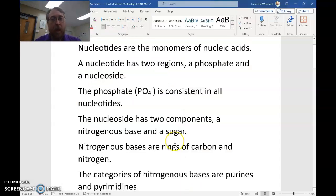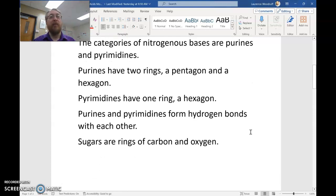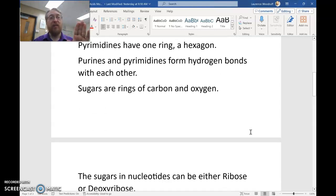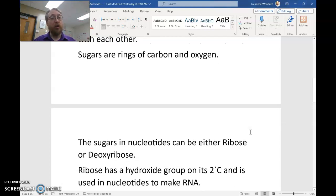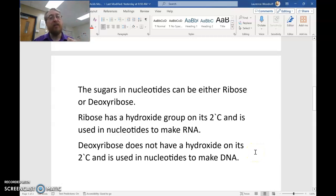Let's review. Nucleotides are the monomers of nucleic acids. A nucleotide has two regions, a phosphate and a nucleoside. The phosphate, PO4-, is consistent in all nucleotides. The nucleoside has two components, a nitrogenous base and a sugar. The nitrogenous bases are rings of carbon and nitrogen. The categories of nitrogenous bases are purines and pyrimidines. Purines have two rings, a pentagon and a hexagon. Pyrimidines have one ring, just a hexagon. The purines and pyrimidines form hydrogen bonds with each other. And sugars are rings of carbon and oxygen. The sugars in nucleotides can be either ribose or deoxyribose. Ribose has a hydroxide on its two prime carbon and is used in nucleotides to make RNA. And deoxyribose does not have a hydroxide on its two prime carbon and is used in nucleotides to make DNA.